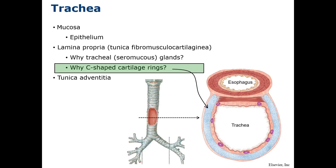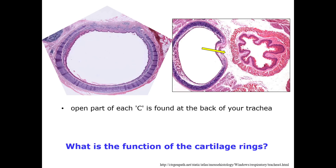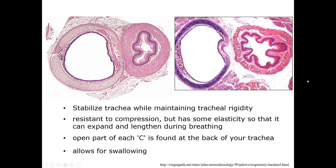Other structures critical to tracheal function are the C-shaped cartilage rings found between the submucosa and the adventitia. The framework of the trachea and extra-pulmonary bronchi consists of a stack of C-shaped hyaline cartilages, each surrounded by a fibroelastic layer contiguous with the perichondrium. The open part of each C-ring points posteriorly to the esophagus. These rings reinforce the tracheal wall and keep the tracheal lumen open — they are resistant to compression but have enough elasticity so the trachea can expand and lengthen during breathing, and narrow enough to allow the esophagus to stretch with the food bolus. The C-shape allows the trachea to be flexible.